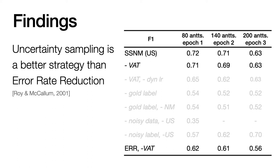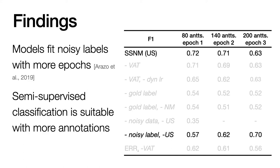We also did a comparison of active learning strategies, and found that uncertainty sampling performed better than error rate reduction at this task. When there are more training iterations, the models tend to fit noisy labels and degrade the performance. This coincides with the finding that noisy labels are harder to learn, so they are being fit later in the training process. When there are more annotations, semi-supervised classification is a more suitable choice, because it won't be affected by noisy labels.